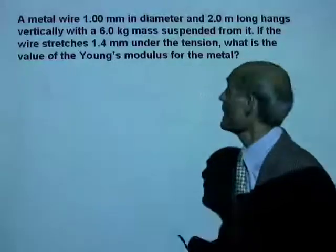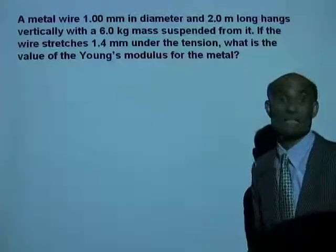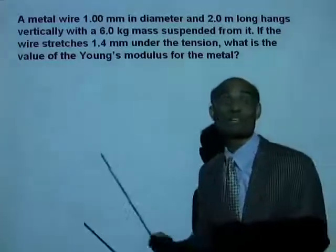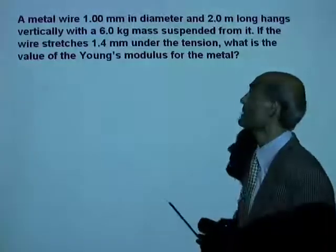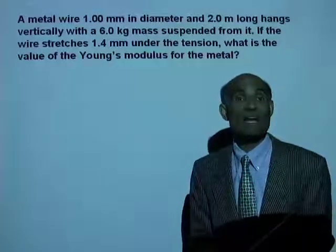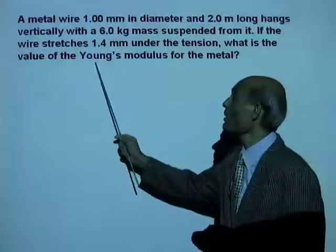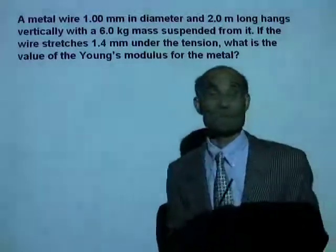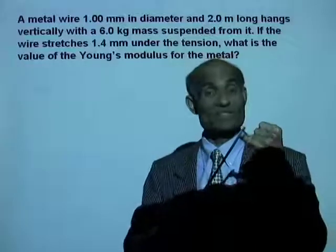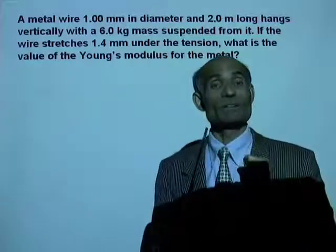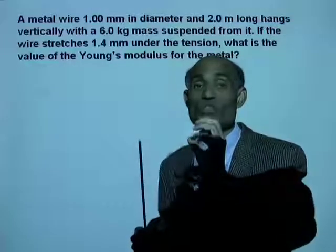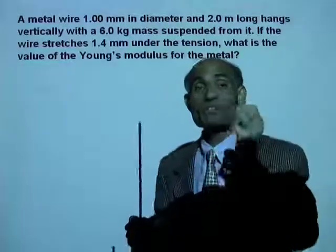Let's do another problem. A metal wire 1 millimeter in diameter and 2 meters long hangs vertically with a 6 kilogram mass suspended from it. If the wire stretches 1.4 millimeters under tension, what is the value of Young's modulus for the metal? To find Young's modulus, first we need to calculate the stress — force divided by area — then we need to calculate the strain, which is the ratio of the change in length to the original length.